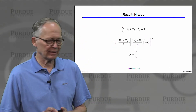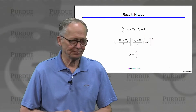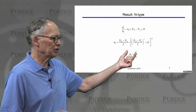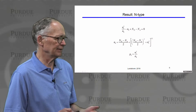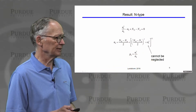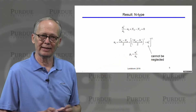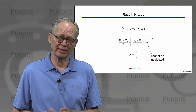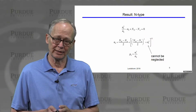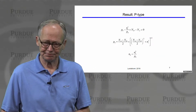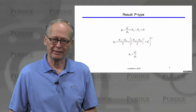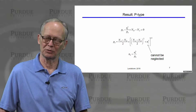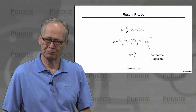It's not so difficult to calculate the electron concentration. We start with our quadratic equation again and solve it for the electron density. The only difference is we cannot ignore the ni² term, so the calculation gets a little more complicated — we just have to solve the quadratic equation. The same applies for p-type: we have a quadratic equation for the holes and we can't ignore the intrinsic carrier density.